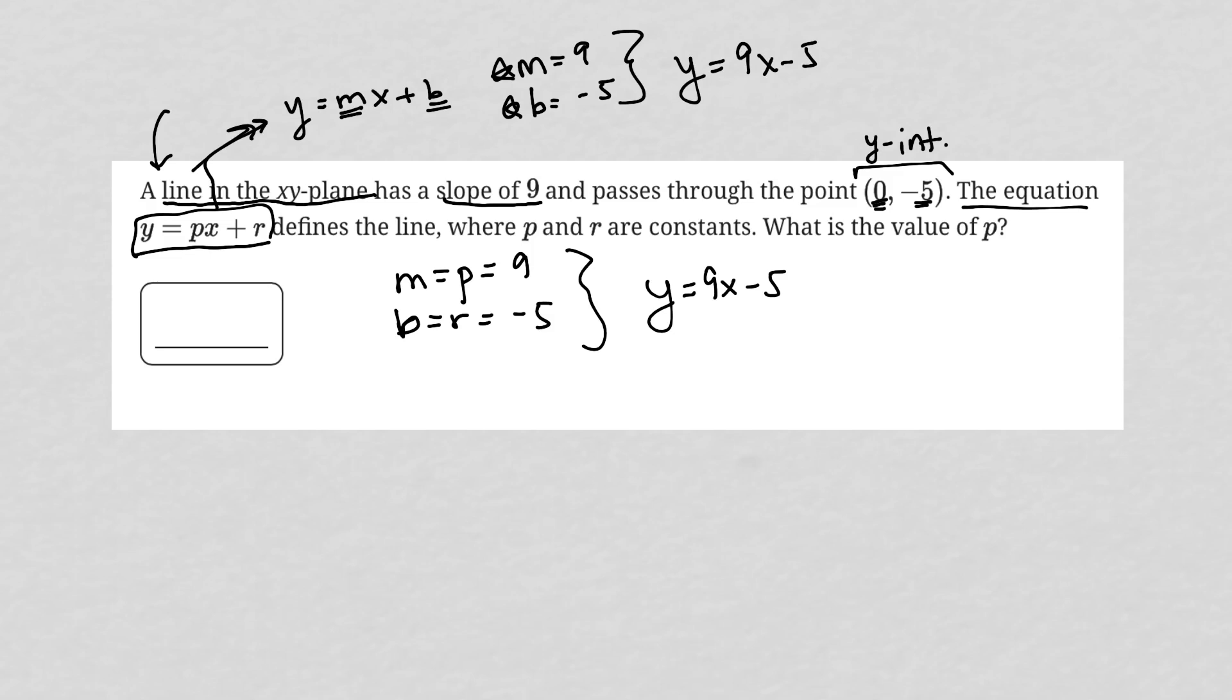It says where p and r are constants, what is the value of p? Well again, p is the replacement for the slope m, so we know that that is equal to 9, and therefore the correct answer here is 9.